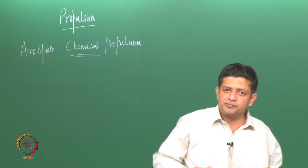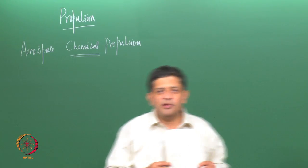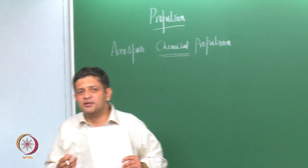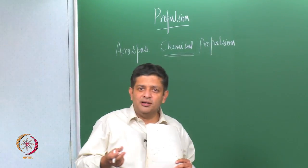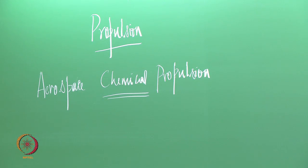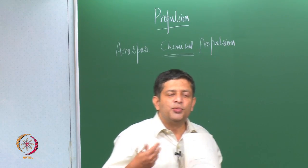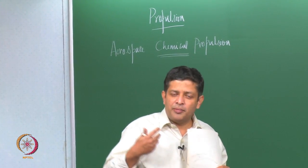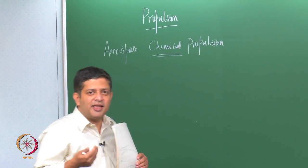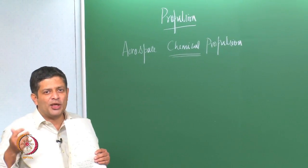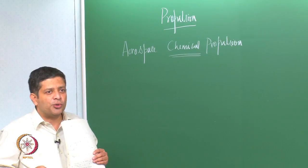If you look at chemical propulsion, the energy is stored in the bonds of the fuel and the oxidizer, and when they are broken and fresh bonds are made, energy is released which leads to high temperature gases which can then be expanded through a nozzle, which we will discover as we go along in this course.